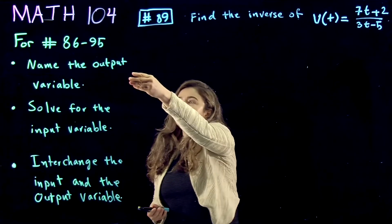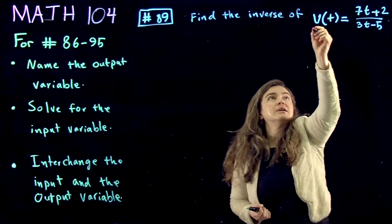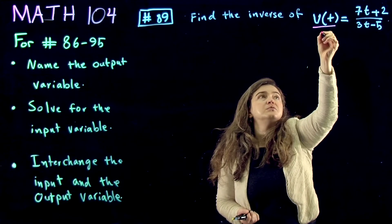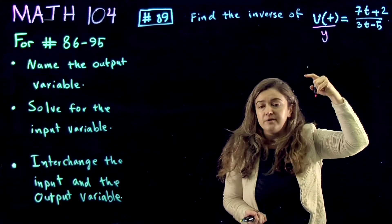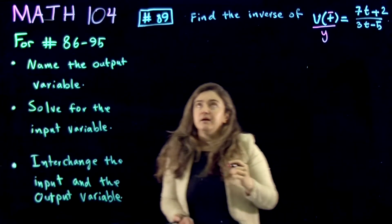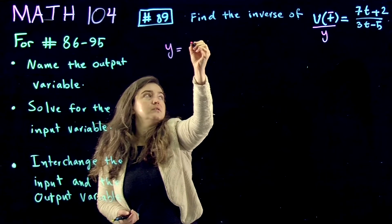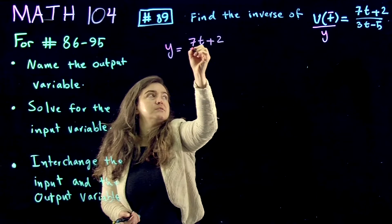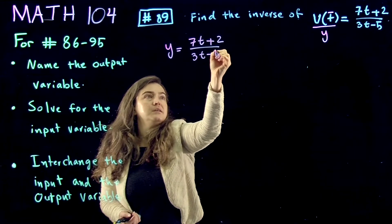The first thing we do is figure out what is the output and what is the input of the function. This is the output, and I rename it to y, which is a valid variable name because it doesn't interfere with t. The input is going to be t, and now I'm rewriting that: y is equal to 7t plus 2 divided by 3t minus 5.